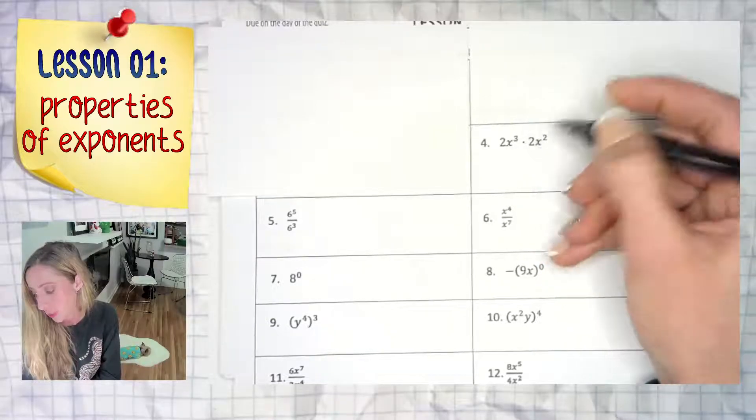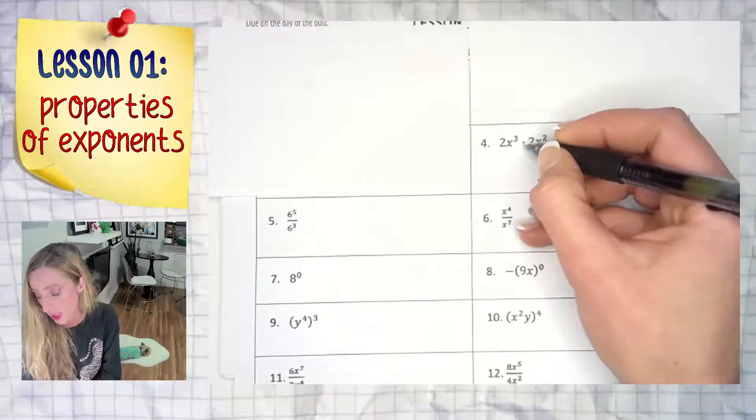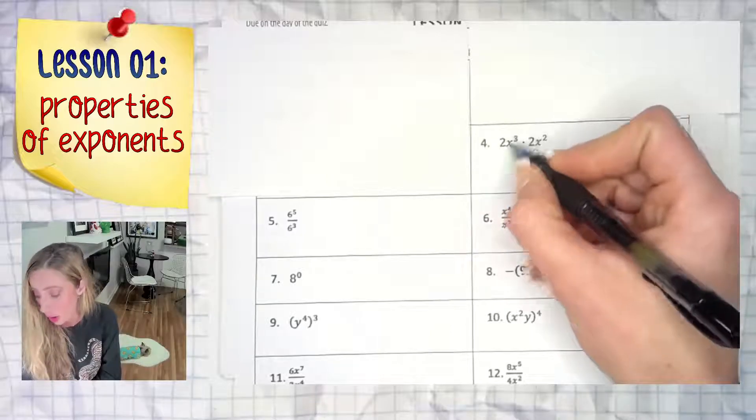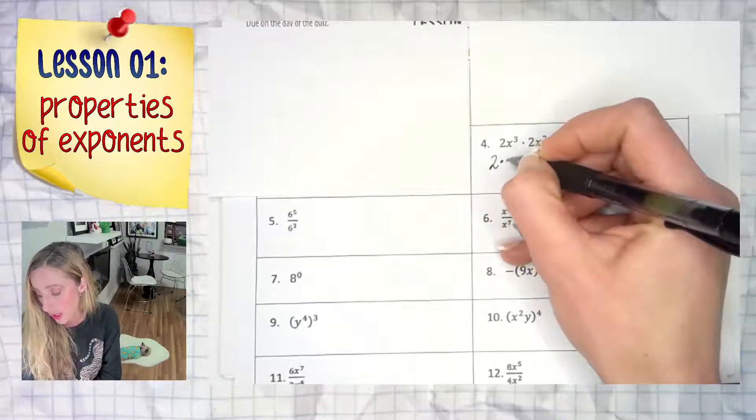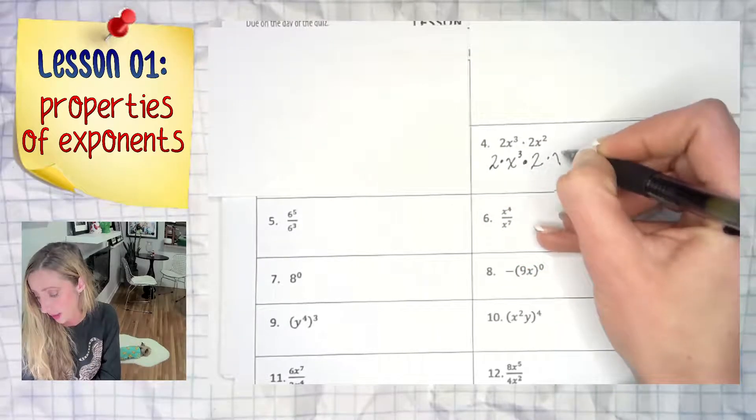However, in this example, we are asked to find a product. This dot in between to represent multiplication is really no different than the multiplication non-existent symbol in between the 2 and the x to the third. So we really have 2 times x to the third times another 2 times an x to the second.